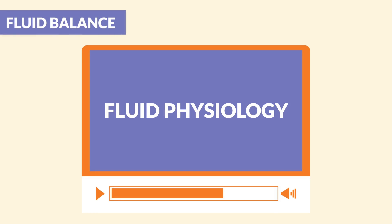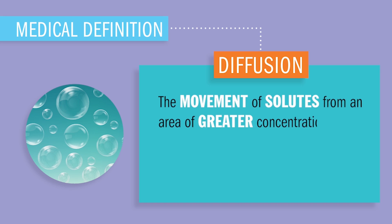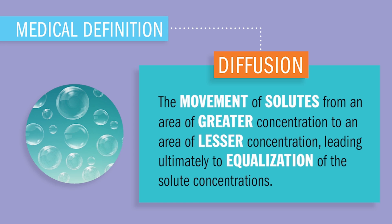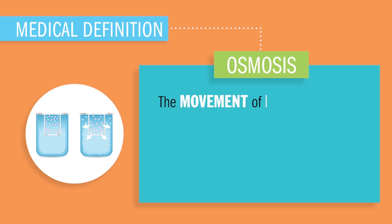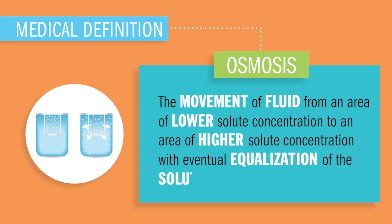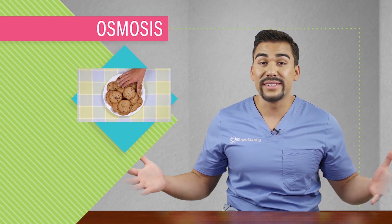Now let's cover key terms for fluid physiology: osmosis, diffusion, and filtration. Diffusion is the movement of solutes from an area of greater concentration to an area of lesser concentration, leading to equalization — it occurs through random movement of ions and molecules. A great example is the exchange of oxygen and CO2 inside the lungs between the pulmonary capillaries and the alveoli. Osmosis is the wet version of diffusion — the movement of fluid from an area of lower solute concentration to higher solute concentration, with eventual equalization. The goal of both is to balance and equal out the playing field.